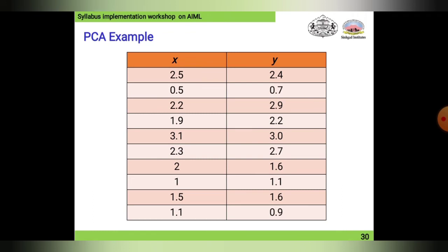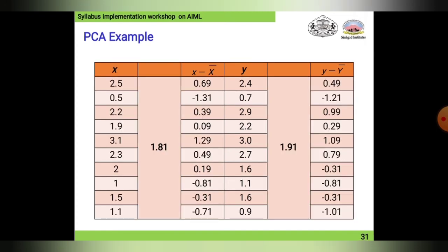Now this is a standard PCA example. X consists of these values, Y consists of these values. For example, X equals 2.5 and Y equals 2.4. X minus X-bar gives 0.69, Y minus Y-bar gives 0.49, and the correction factor is 1.81.